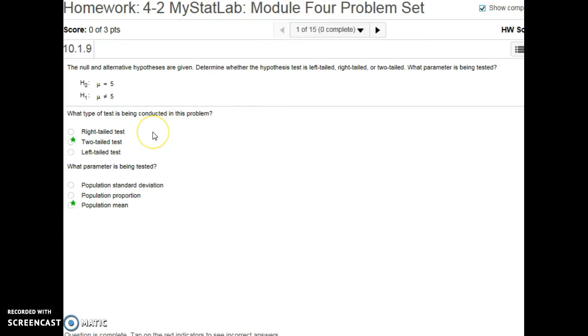For number one, looking at hypothesis tests, there's always two parts like this. In the first one, we call it H sub naught. It's an H with a zero down below. It always has an equal sign. In this one, we're saying that our null hypothesis is that the population mean is equal to 5.